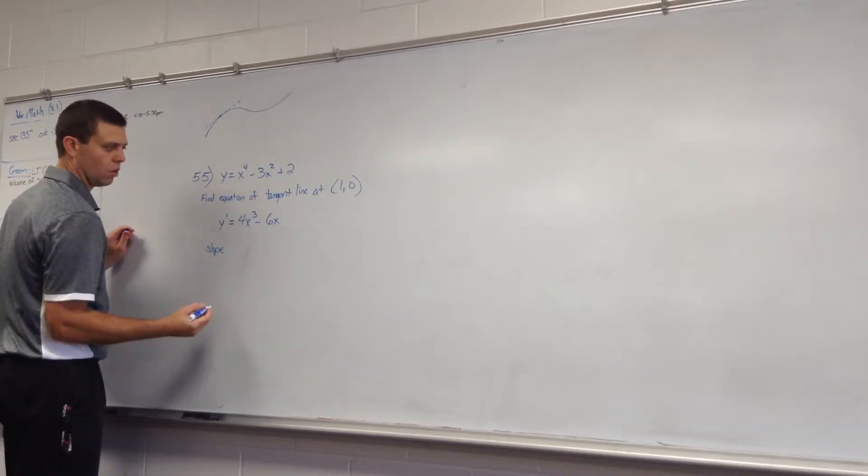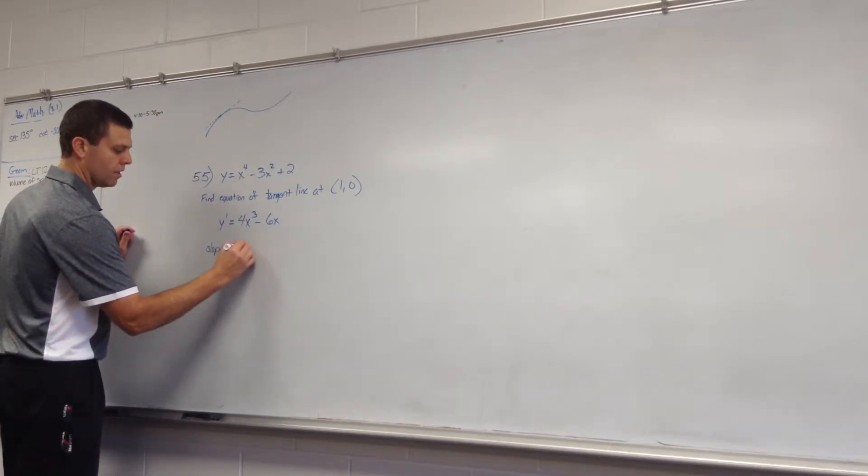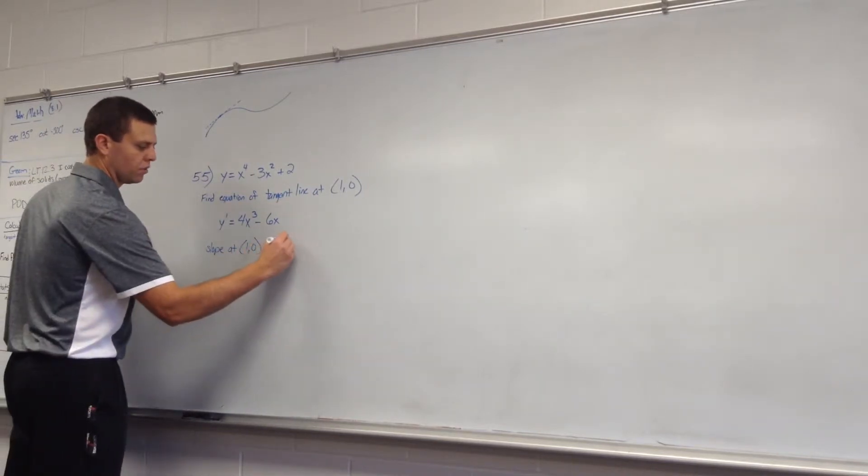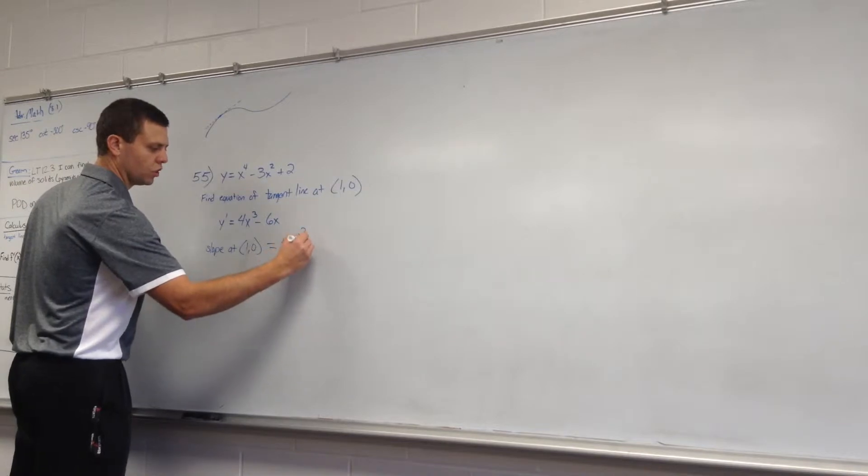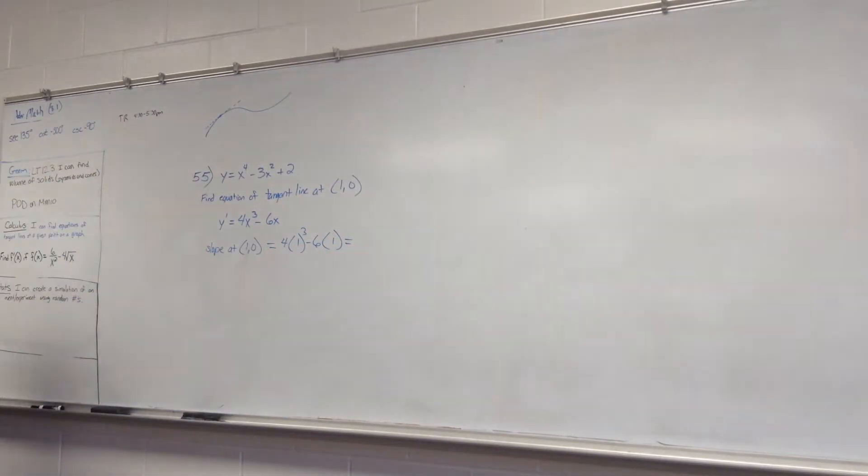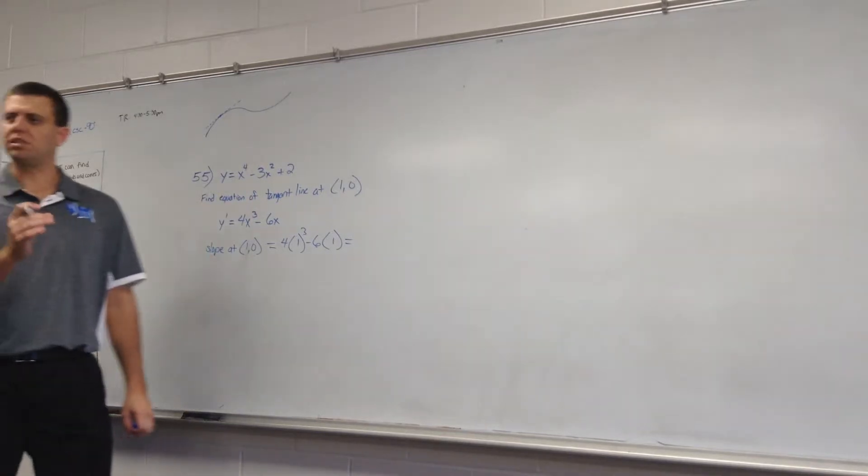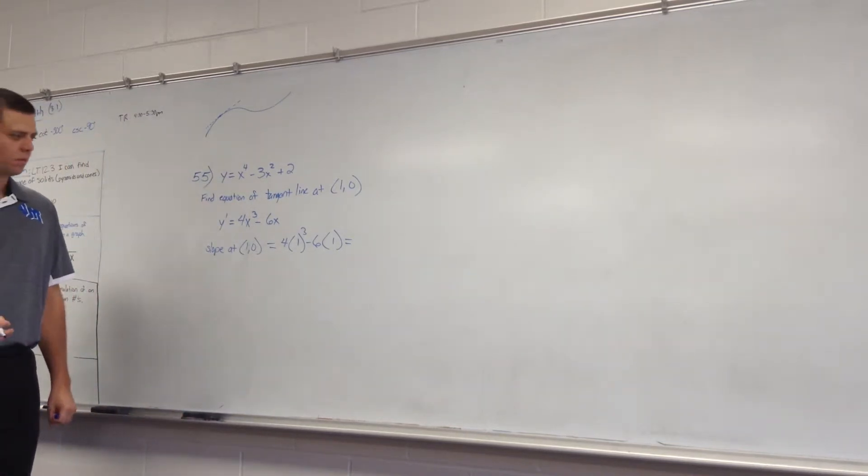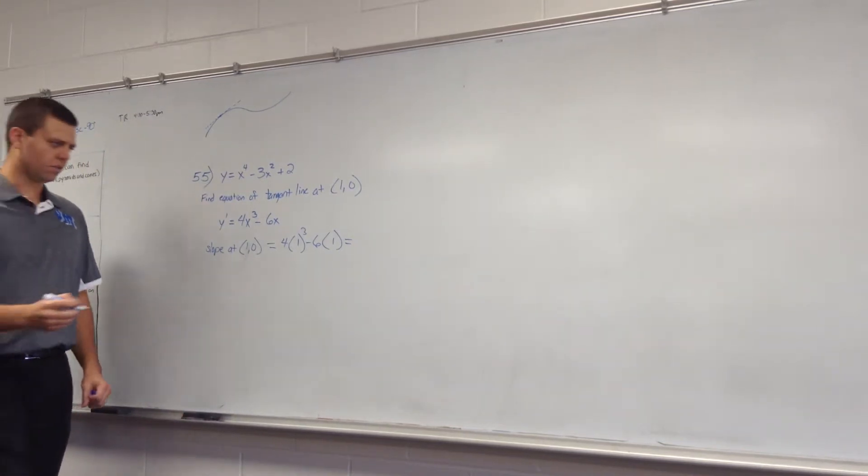The slope at the point 1 comma 0 would equal 4 times 1 cubed minus 6 times 1, because I'm plugging in the x value of that coordinate into my derivative to determine the instantaneous rate of change or the instantaneous slope at that point. And what do we get? Negative 2.